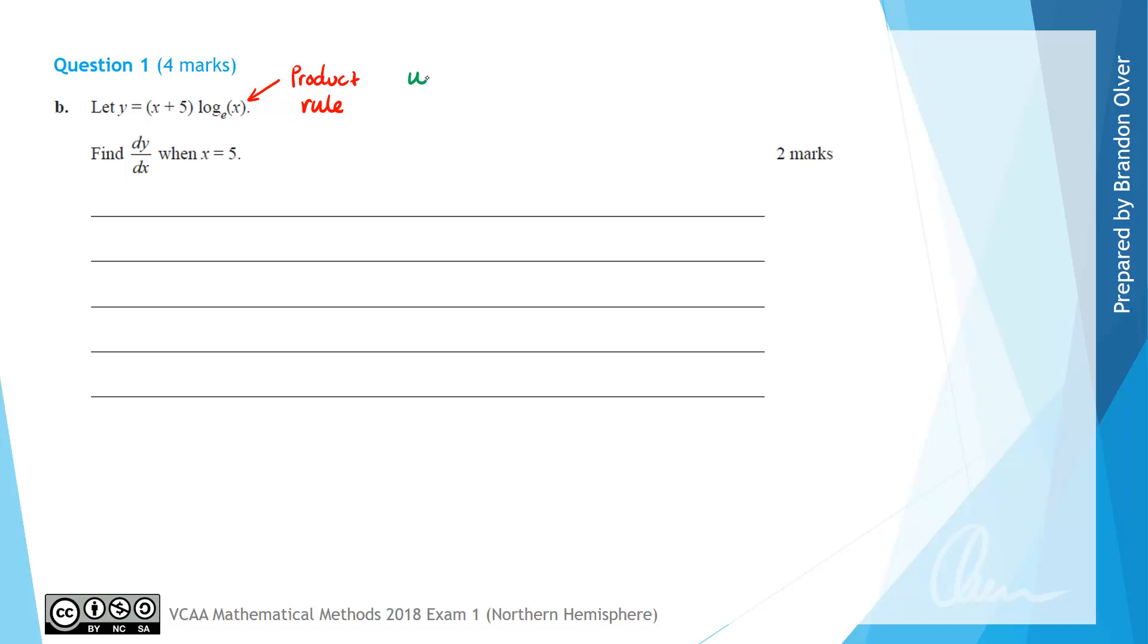So to apply the product rule, we're going to have u is equal to the first function, which is x + 5, and v is the second function that's multiplied, which is log_e(x). So du/dx is going to simply equal 1, and dv/dx is going to equal 1/x.